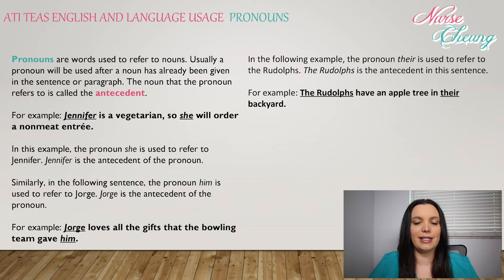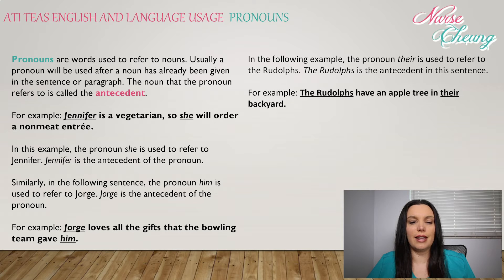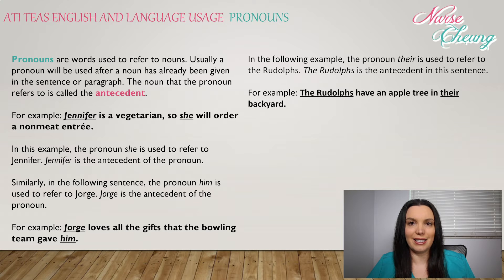Similarly, in the following sentence, the pronoun 'him' is used to refer to George. George is the antecedent of the pronoun. For example: George loves all the gifts that the bowling team gave him. In the following example, the pronoun 'their' is used to refer to the Rudolphs. The Rudolphs is the antecedent in the sentence: The Rudolphs have an apple tree in their backyard.